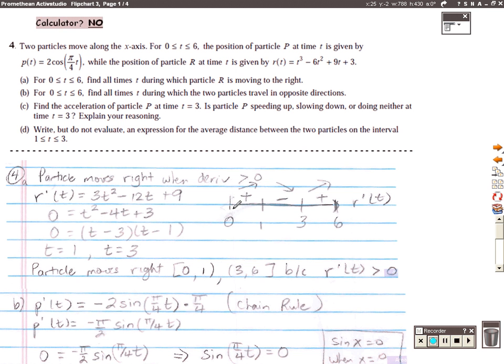Free response question number four. Two particles are moving along the x-axis from 0 to 6. Basically you have two particles that are just going back and forth along a horizontal line. The position of the first particle P is given by this function and the position of the second particle R is given by this function.